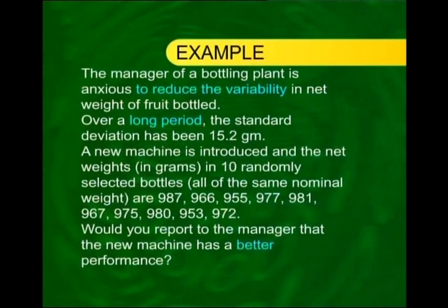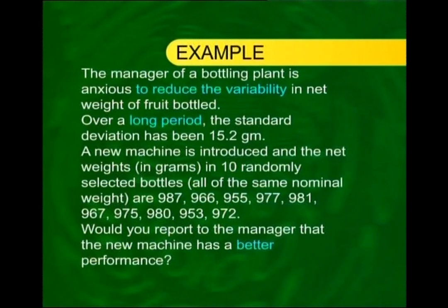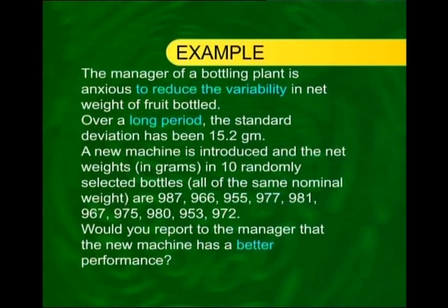But before I proceed, let us consolidate what we did last time with the help of an example. The manager of a bottling plant is anxious to reduce the variability in the net weight of fruit bottled. Over a long period, the standard deviation has been 15.2 grams. A new machine is introduced and the net weights in grams of 10 randomly selected bottles are 987, 966, 955, and so on. Would you report to the manager that the new machine has a better performance?